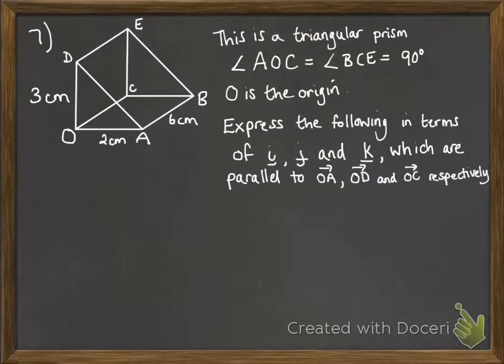Okay, and our last one for this video, we're given this picture of a triangular prism. Those triangles are right angles, and we're told the dimensions of this shape. O is the origin. I, J, and K are vectors which are parallel to OA, OD, and OC, so that sets up where the axes are for you. And we're asked to find these vectors.